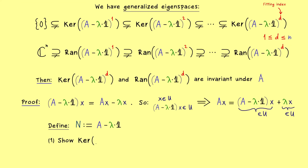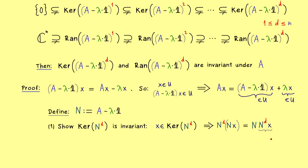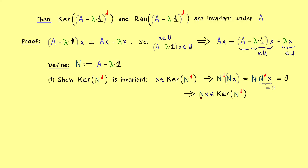The first thing we show is that the kernel of N to the power d is invariant under N. We take an element x from this kernel and apply N, then check if the result is still in the kernel. We need N to the power d applied to Nx to give the zero vector. We can rewrite it as N applied to N^d times x. Since x is in the kernel, N^d times x is already the zero vector, and applying N to the zero vector gives the zero vector. So N times x also lies in the kernel — the kernel of N^d is invariant under N, and therefore also invariant under A.